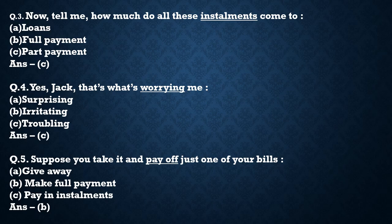Question 4: 'Yes Jack, that's what's worrying me' — find a similar word for worrying. Worrying means chinta. Options: surprising, irritating, troubling. Correct answer is C — troubling. Question 5: 'Suppose you take it and pay off just one of your bills' — find a similar word for pay off. Three options are given. The correct answer is B — make full payments.